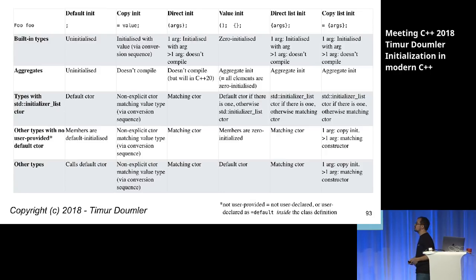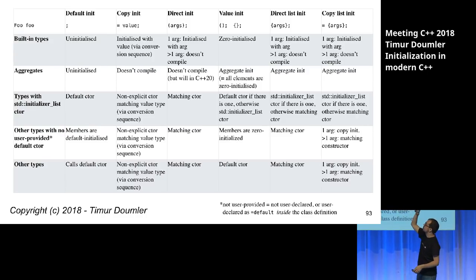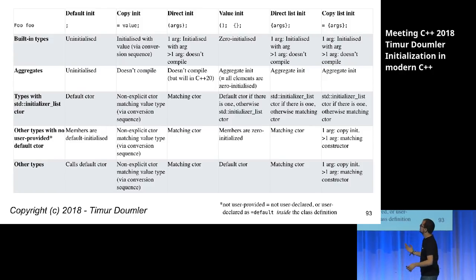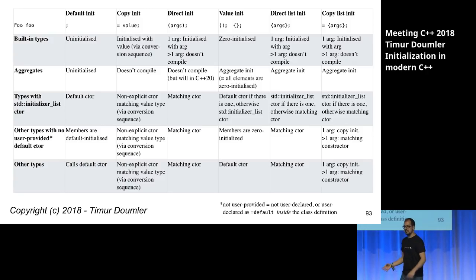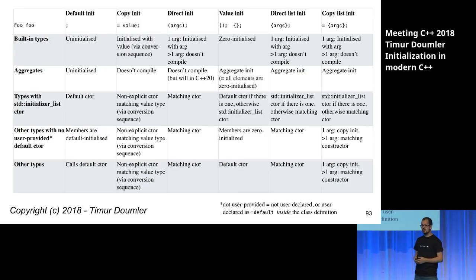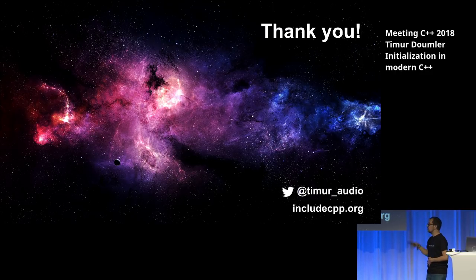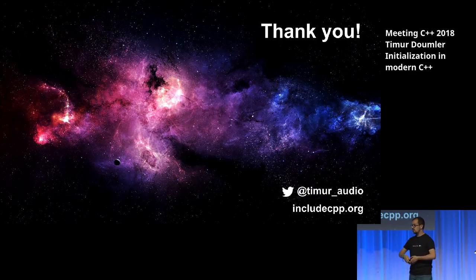My last slide is a table listing all the different syntaxes across the columns and different kinds of types as rows, showing what happens for each combination. It's something you can print out and put on the wall as a reminder of what happens when. I hope this will be useful. That's my talk. You can find me on Twitter and on includecpp.org on the Discord.